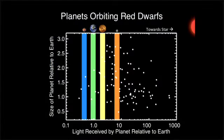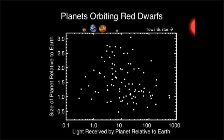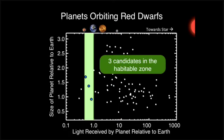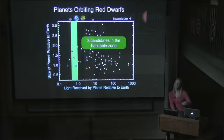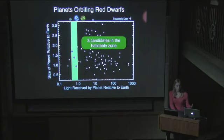These are 95 planets orbiting Kepler M dwarfs. If I remove those color guides and add in the habitable zone instead, you can see that we found three of our 95 planets received the right amount of light to have liquid water on their surfaces. Of those three objects, two are very similar in size to the Earth, and one is just a little bit bigger than one and a half times the size of Earth. So all three meet the criteria for things that are likely to be rocky and at the right temperature to have liquid water.